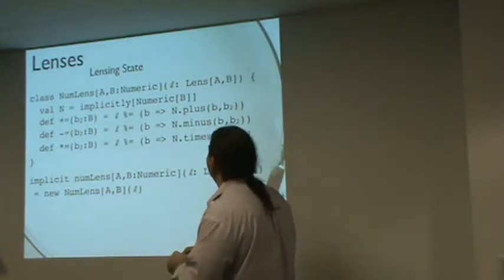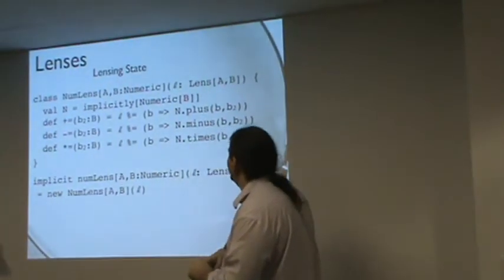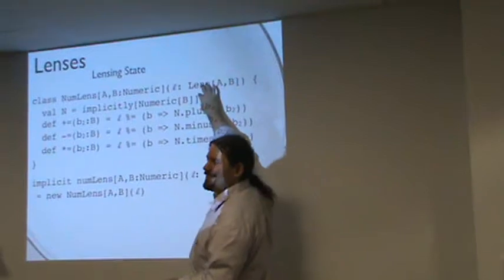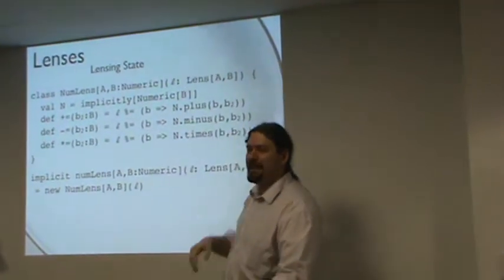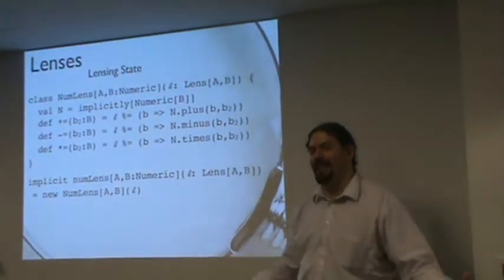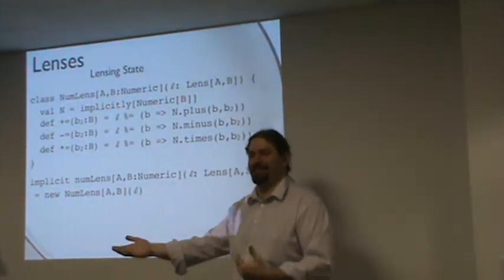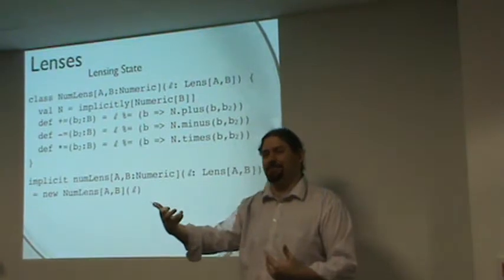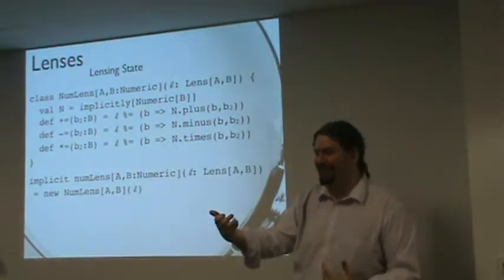I can actually build lens actions that will use, if I have a numeric instance for the type, I can actually foo plus equals one will actually be a purely functional computation that will add one to the result of the thing that's being lensed through foo.